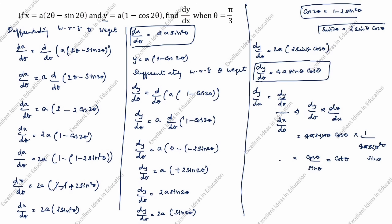We need to find dy/dx when θ equals π/3. Substituting, dy/dx equals cot(π/3), which equals cos(π/3) divided by sin(π/3).